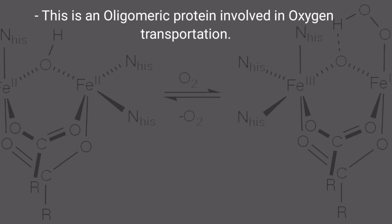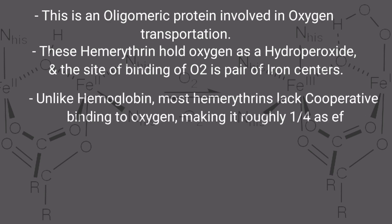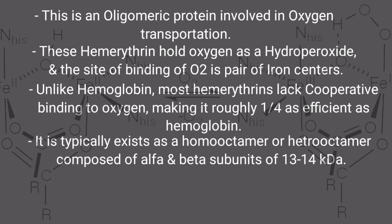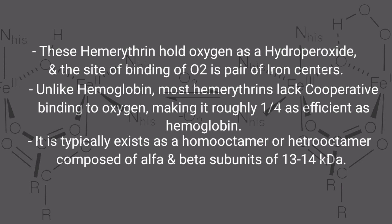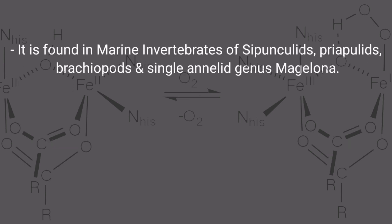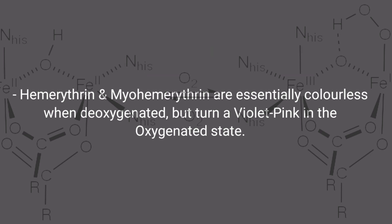The fourth respiratory pigment is hemerythrin. It is an oligomeric protein involved in oxygen transportation. Hemerythrin holds oxygen as a hydroperoxide, and the site of oxygen binding is a pair of iron centers. Unlike hemoglobin, most hemerythrin lacks cooperative binding to oxygen, making it roughly one-fourth as efficient as hemoglobin. It typically exists as a homo-octomer or hetero-octomer composed of alpha and beta subunits of 13 to 14 kilodaltons. It is found in marine invertebrates including sipunculids, priapulids, branchiopods, and the annelid genus Magelona. Hemerythrin and myohemerythrin are essentially colorless when deoxygenated but turn violet-pink in the oxygenated state.